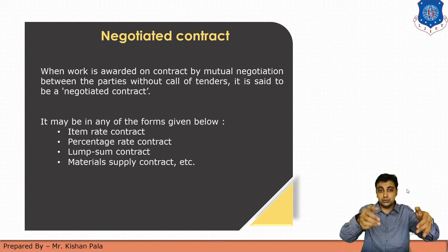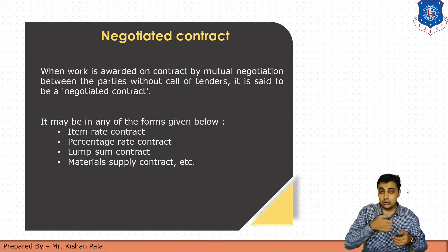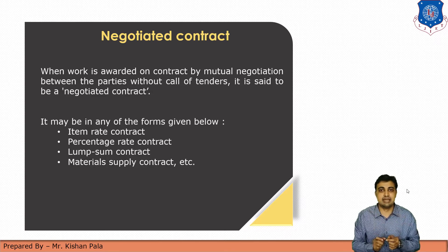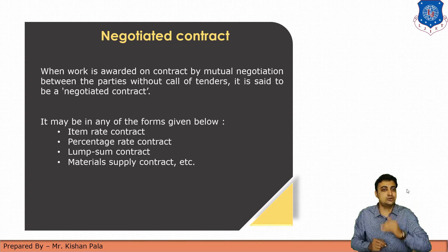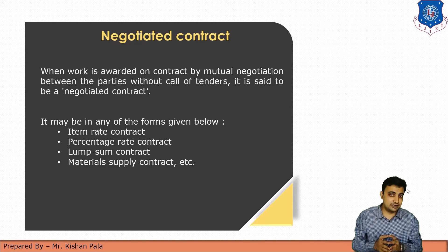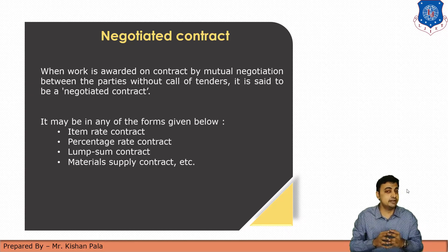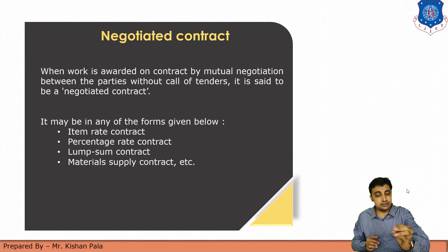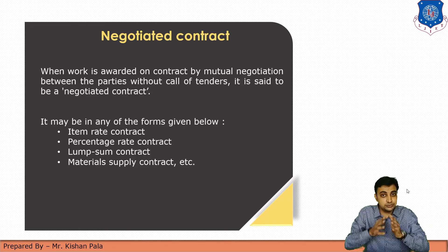In a negotiated contract, you mutually select the contractor after negotiation with a limited number of contractors who are the best at that type of work. It may be an item rate contract, percentage rate contract, lump sum contract, or material supply contract, depending on the situation. The key point is that you select the contractor through negotiation without declaring a public tender notice.